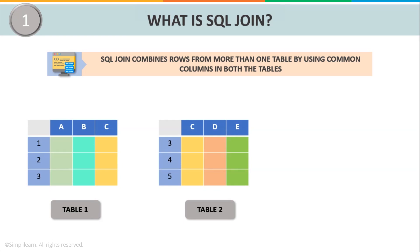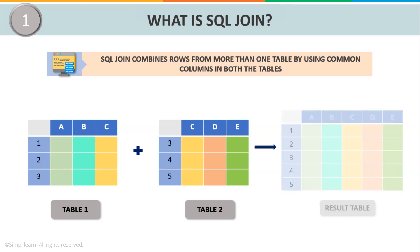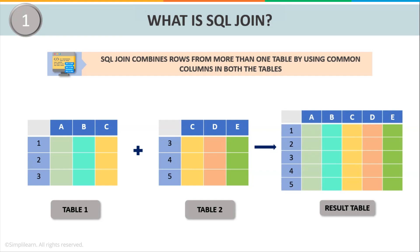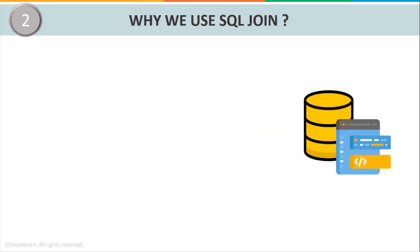Now consider two tables here. Table 1 has three columns A, B, C and three records — let's say 1, 2, 3 for reference. Similarly, Table 2 also has three columns B, C, D and three records 3, 4, 5. Now instead of querying each table every time to retrieve data, I'll simply join these two tables and this will be the resultant table. Also, when joining two tables, they should compulsorily have a common column. Here, C is the common field which forms the basis to join these two tables.